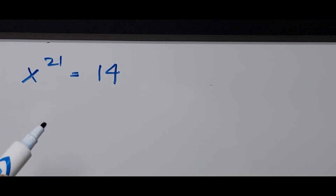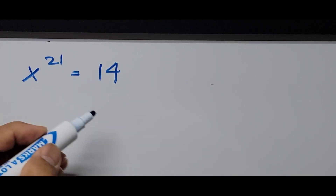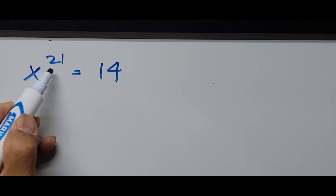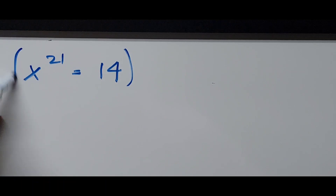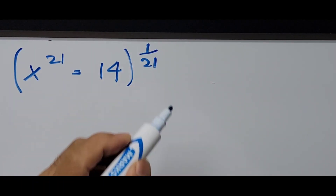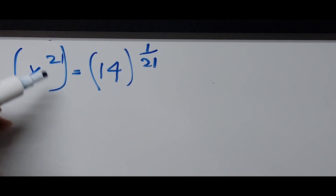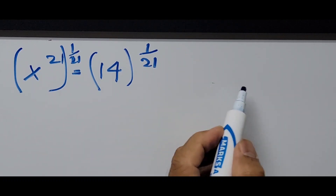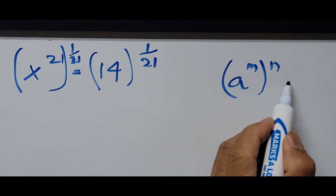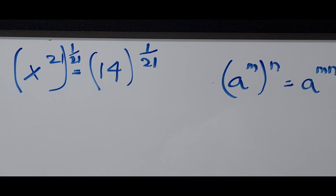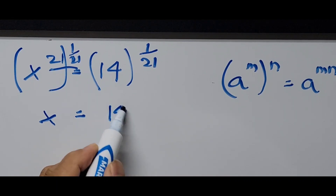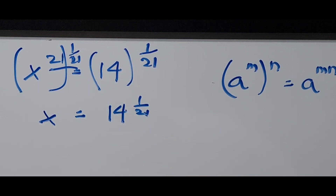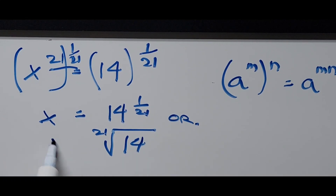To simplify this further and find the value of x, all we have to do is raise the exponent to the reciprocal of 21 — that means raising to 1 over 21 power — on both sides of the equation. Using the exponent rule a raised to m raised to n equals a raised to m times n, we multiply. So we end up with x is equal to 14 raised to the 1 over 21 power, or the 21st root of 14.